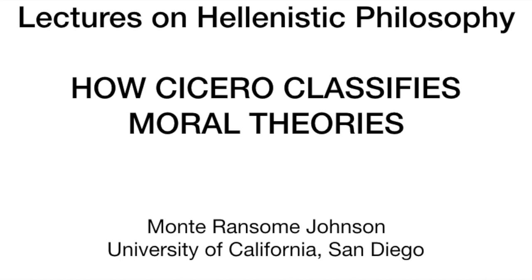The classification of ethical theories that Cicero makes in three different places throughout this work on moral ends. He makes it for the first time here in Book 2, Sections 33 to 43. It rears its head again in Book 4, in the criticism of Stoic theories in Sections 49 to 50. And then it occurs finally in Book 5, Sections 16 to 22.